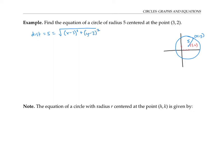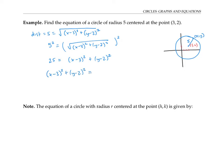If I square both sides of that equation, I get that five squared is equal to the square root squared. In other words, 25 is equal to x minus three squared, plus y minus two squared, since the square root and the squared undo each other. A lot of times people will write x minus three squared plus y minus two squared on the left side, and the 25 on the right side. This is the standard form for the equation of this circle.